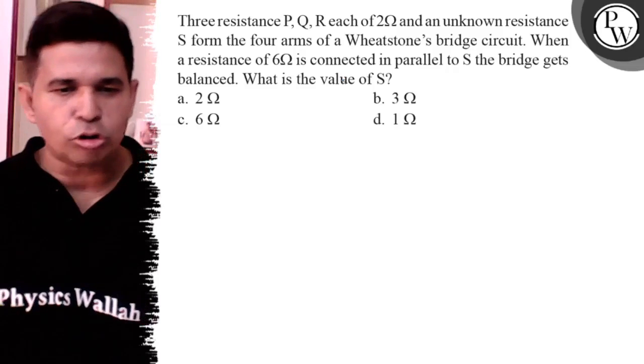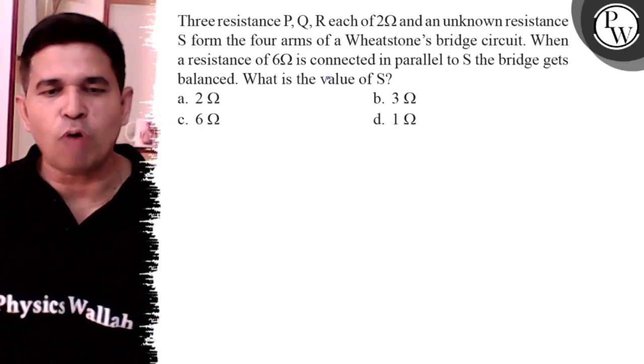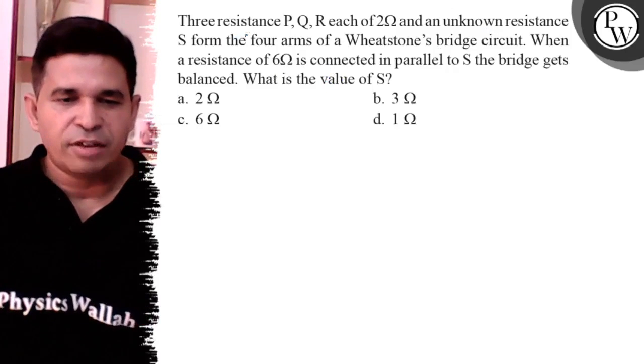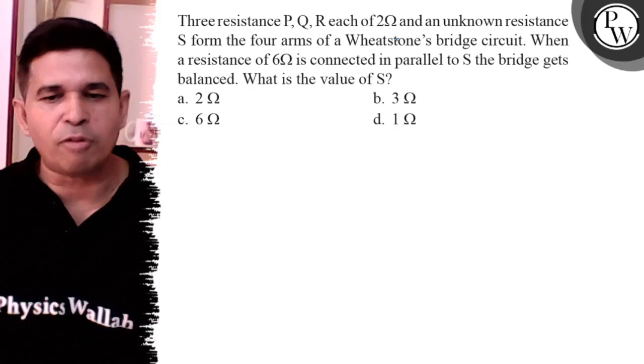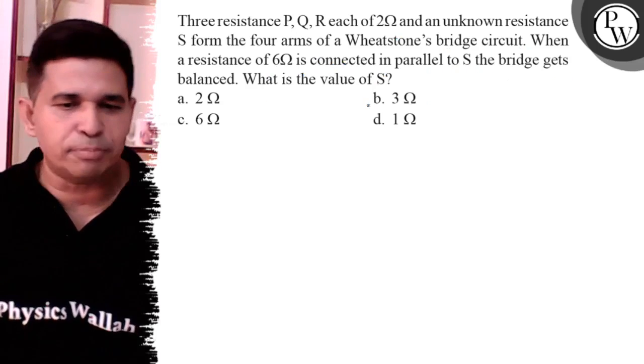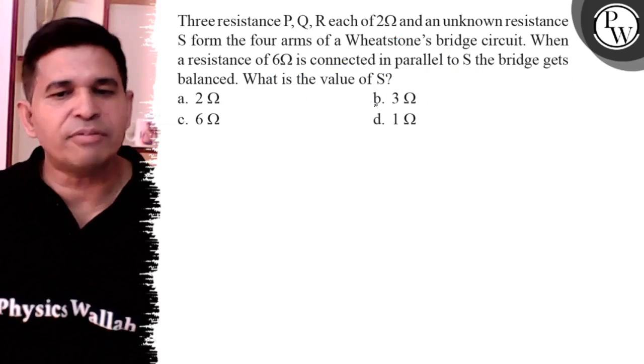Hello Bachchan, let us see this question. Three resistances P, Q, R, each of 2 ohm and an unknown resistance S form the four arms of a Wheatstone bridge. A resistance of 6 ohm is connected in parallel to S, the bridge gets balanced. What is the value of S?